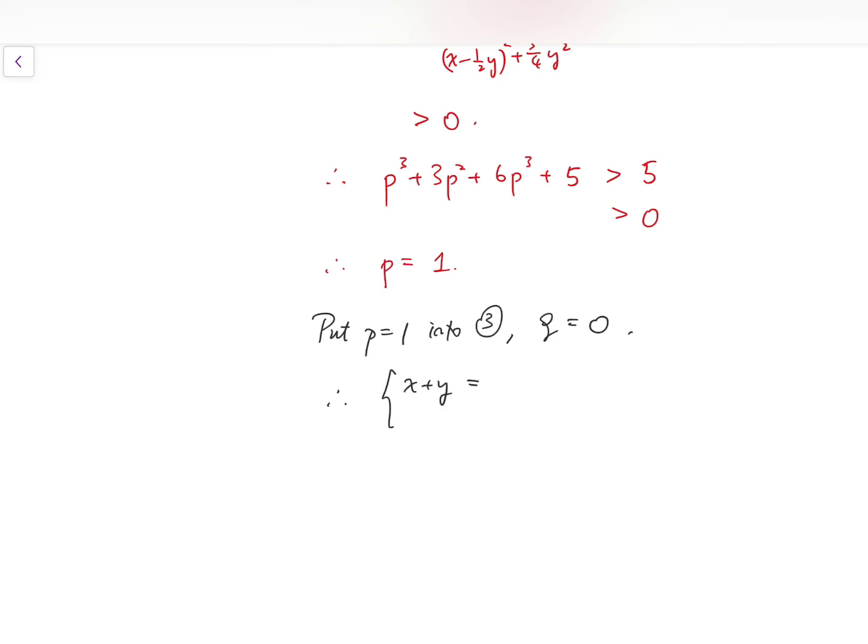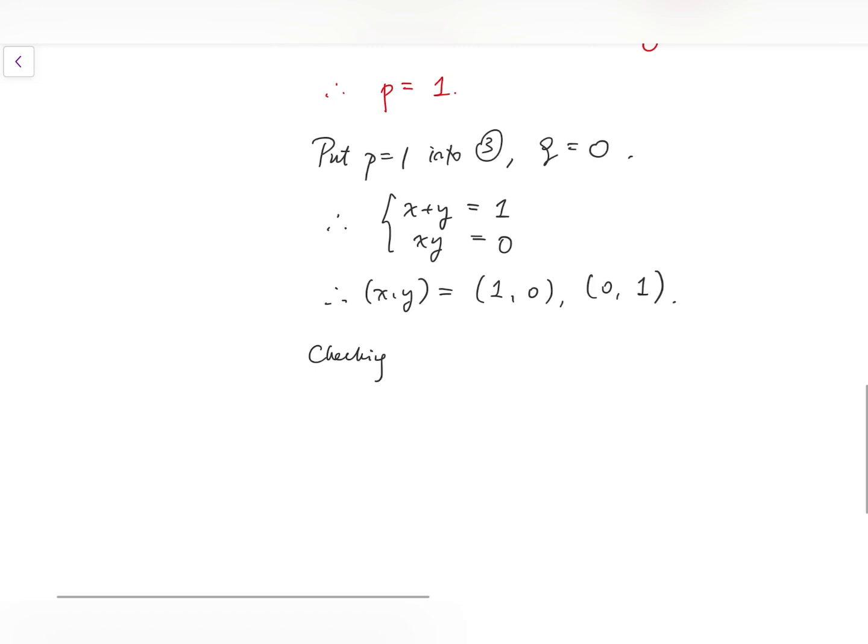And what does this mean? This means that at the same time, the sum of x and y is one while the product is zero. And we can quickly show that x and y can only be one being zero and the other being one. And you can quickly check for either case, x plus y or x cubed plus y cubed are both 1 and same for the sum of the power of five. And so these are valid solutions and this is the final answer.